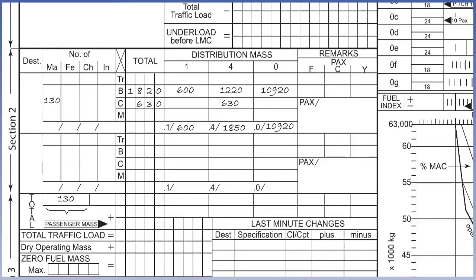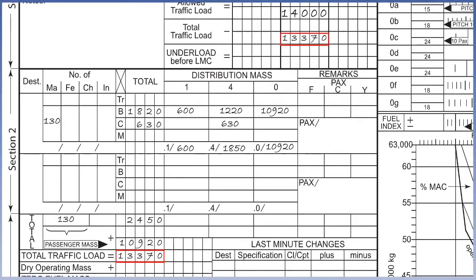We can now calculate the total traffic load by entering the total of baggage and cargo, 2,450 kilograms, and below it the total passenger mass of 10,920 kilograms. By adding the baggage and cargo mass, 2,450 kilograms, to the total passenger mass of 10,920 kilograms, we arrive at a total traffic load of 13,370 kilograms. The total traffic load must also be entered in Section 1 in the total traffic load box. The underload is established by subtracting the total traffic load, 13,370 kilograms, from the allowed traffic load, 14,000 kilograms, giving an underload of 630 kilograms to allow for any last-minute changes.